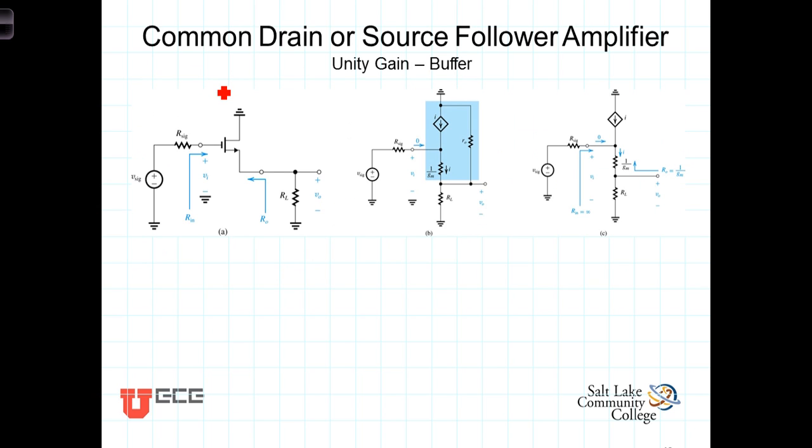Here's the common drain configuration. Once again, the signal is attached or connected directly to the gate, so the input resistance is infinite. And the drain is tied to ground. The output then is taken from the source, thus the name source follower. The output is just the source voltage.